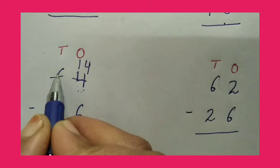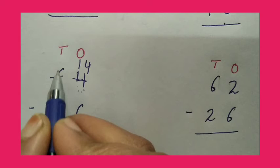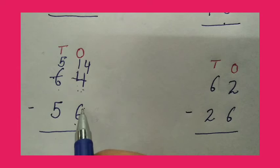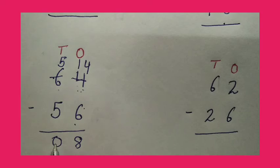Now here we subtract — we take 1 from 6, so we will write here 5. 14 minus 6 is equal to 8. 5 minus 5 is equal to 0. So students, 64 minus 56 is equal to 8.